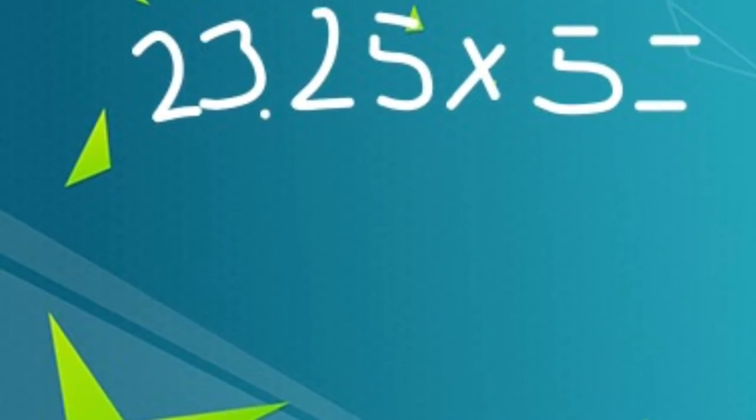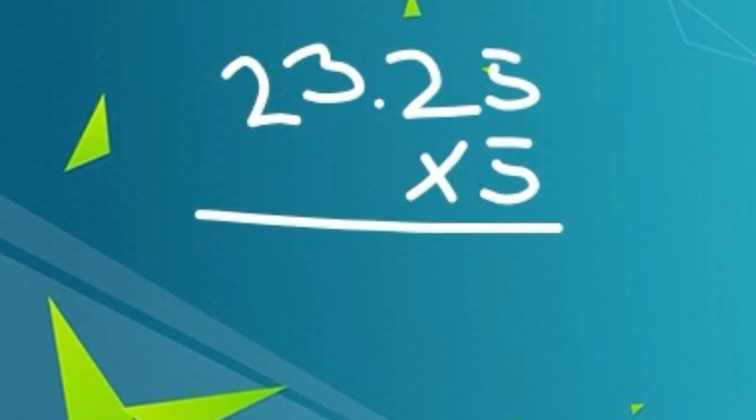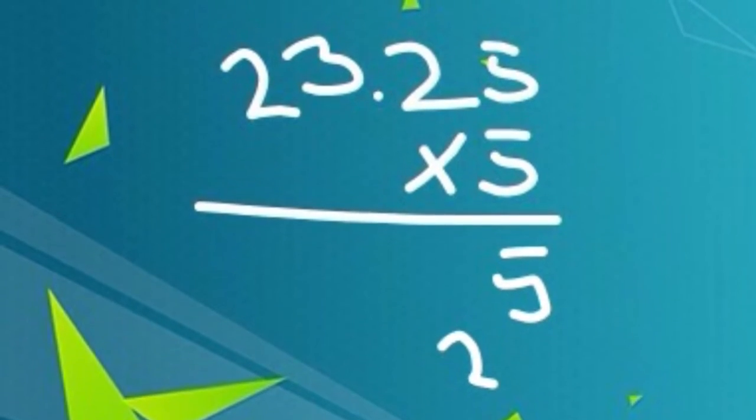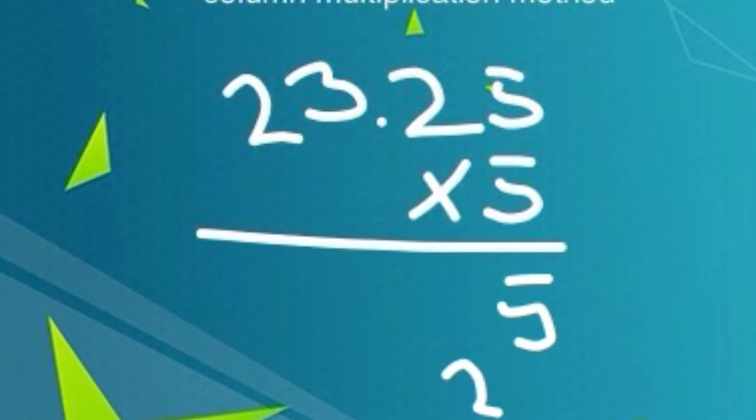Part 4. 20.25 times 5, the column multiplication method. 0.05 times 5 equals 0.25.